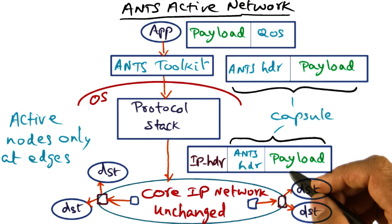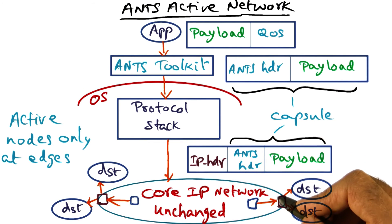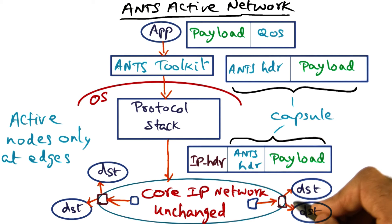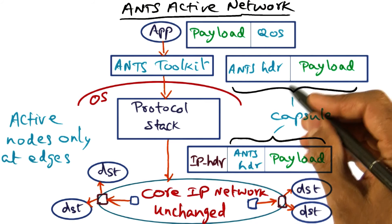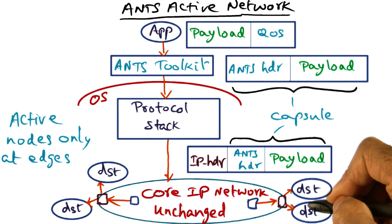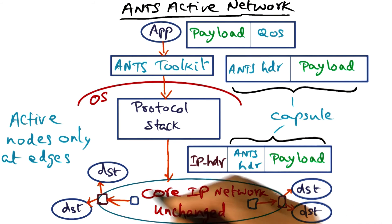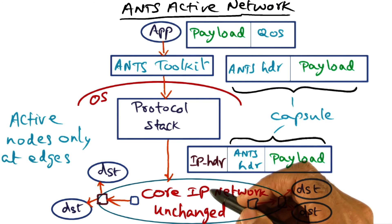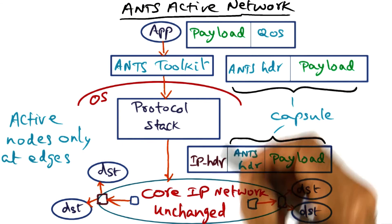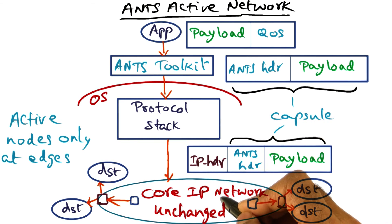Going back to the example of sending greetings to siblings, only the edge nodes have to do the magic in order to take the original message and process the code to deliver it to multiple destinations. The rest of the network can remain unchanged — the core of the IP network can be unchanged and intelligence can be at the edge. This is sort of marrying the active network vision with the core IP network being unchanged.